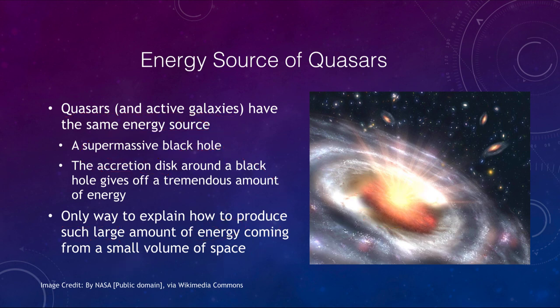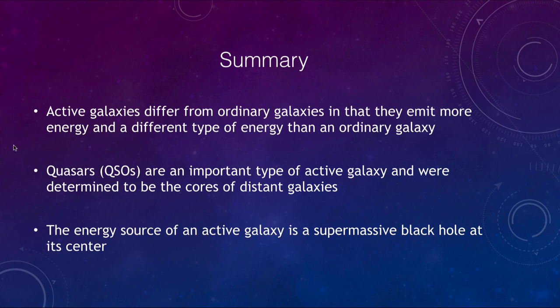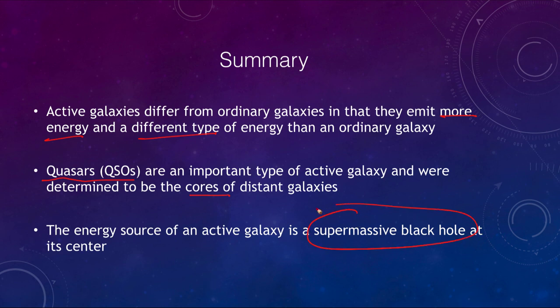To summarize: active galaxies differ from ordinary galaxies in two ways — they emit more energy, and it is a different type of energy: non-stellar energy. Quasars, sometimes called QSOs, are an important type of active galaxy and have been determined to be the core of very distant galaxies. The energy source of that active galaxy is a supermassive black hole at its center, being fed by infalling material and therefore giving off a lot of energy. That concludes this lecture on active galaxies and quasars.